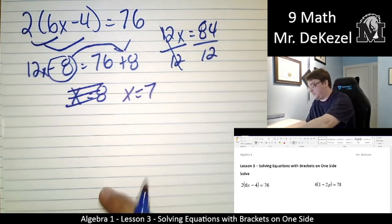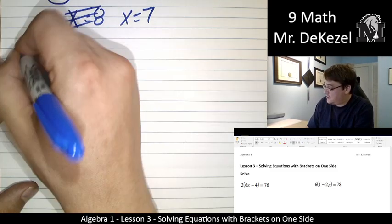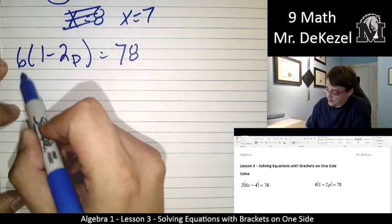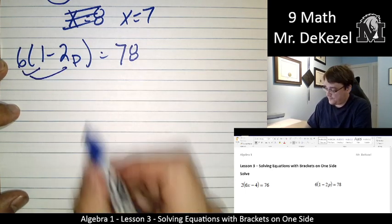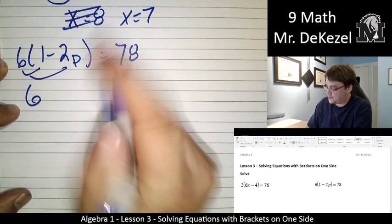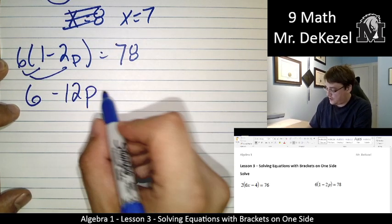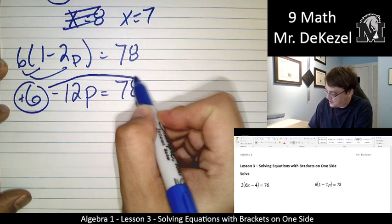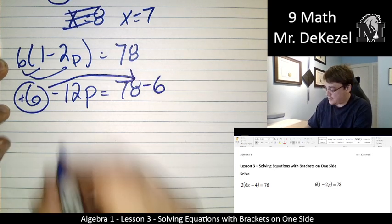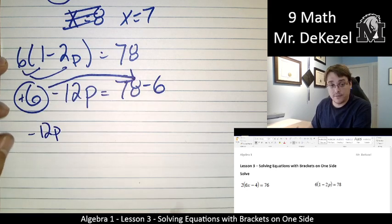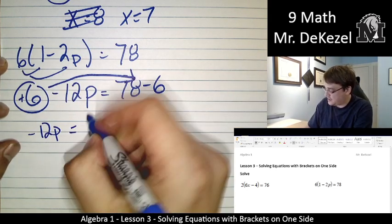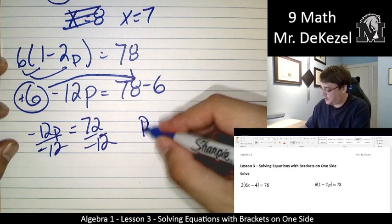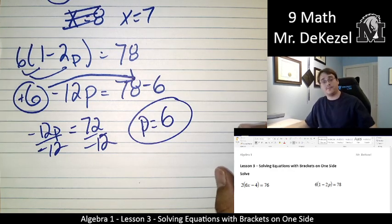Let's continue to the next one. We have 6(1 minus 2p) equals 78. We're going to go ahead and again distribute the 6 through the brackets. 6 times 1 is 6. 6 times minus 2 is minus 12. We bring the variable along. That all equals 78. We're going to bring the positive 6 over to the other side, which means it's negative on that side. So that's minus 12p is equal to 78 minus 6 is 72. Divide both sides by minus 12. p is equal to 6.